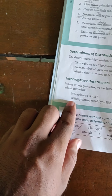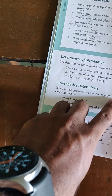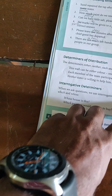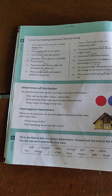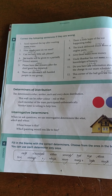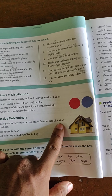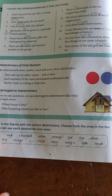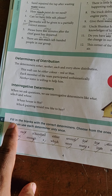Interrogative determiners: when we ask a question, we use interrogative determiners like what, which, and whose. Interrogative determiners are those used in sentences with a question mark, and for that you use which, whose, and what. There is a related activity and exercise for this topic.